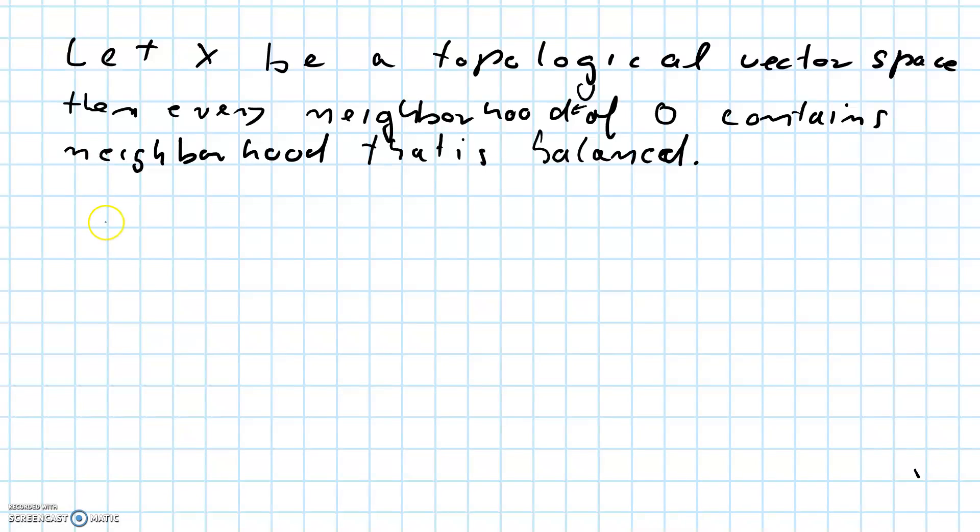w. So we have to prove that inside u lies w and w is balanced. Now remember that one of the axioms for topological vector space was that the usual vector space operations, meaning addition of vectors and scalar multiplication